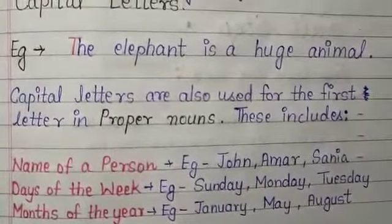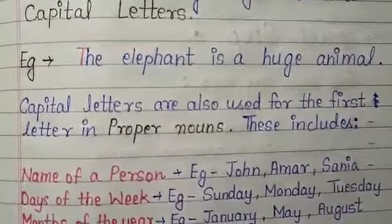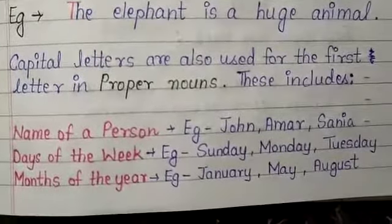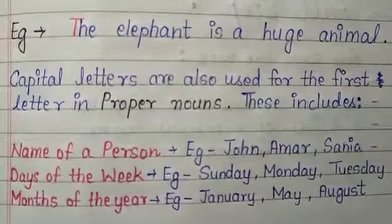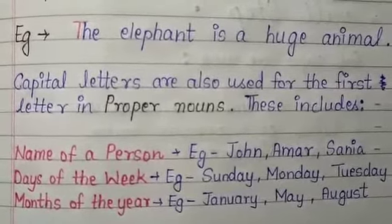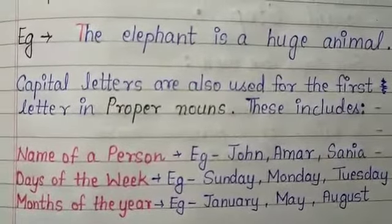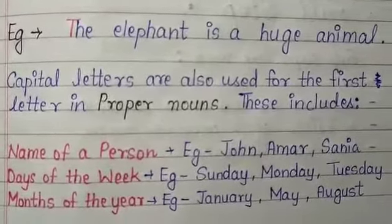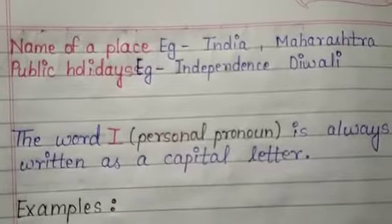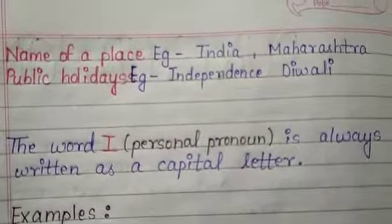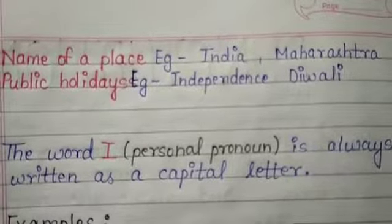Capital letters are also used for the first letter in a proper noun. Like names of a person — John, Amal, Sanya. Days of the week — Sunday, Monday, Tuesday. Months of the year — January, May, August. Name of a place — India, Maharashtra. Public holidays — Independence Day and Diwali.